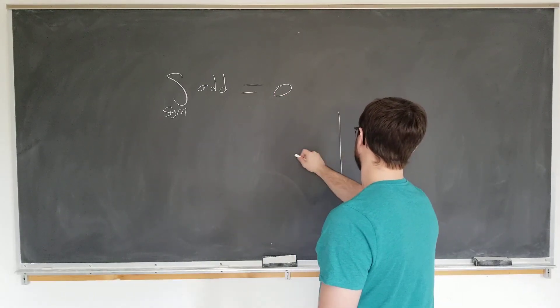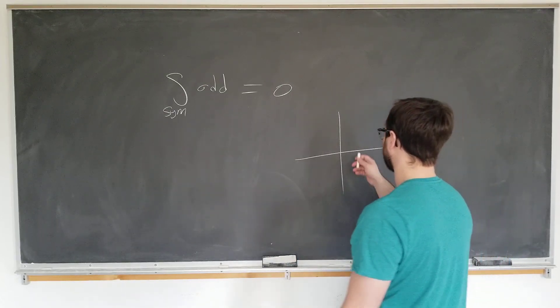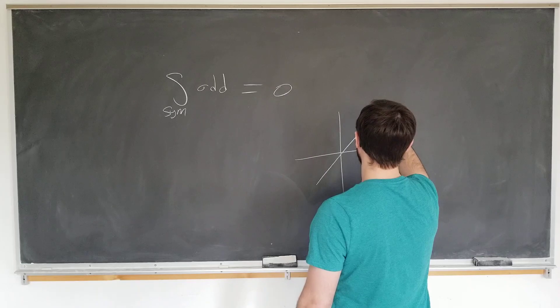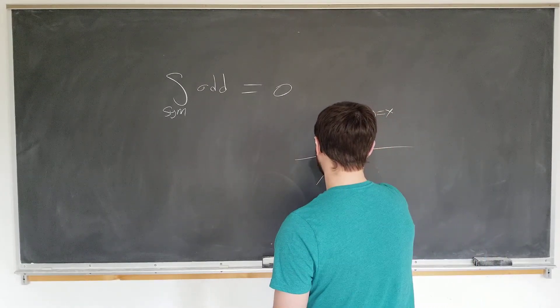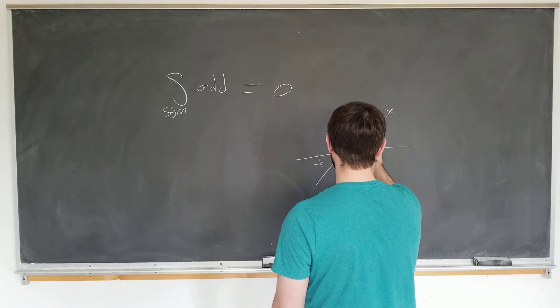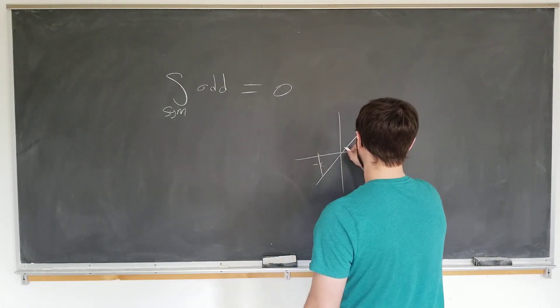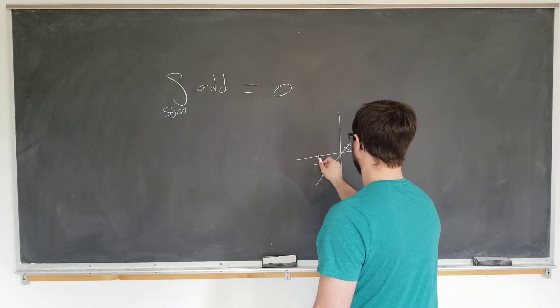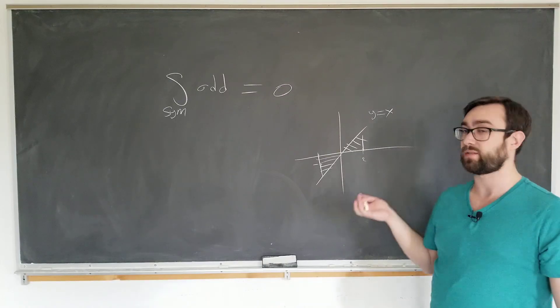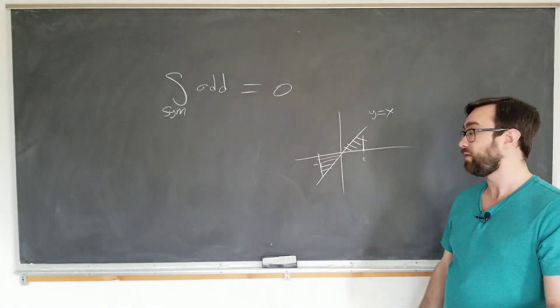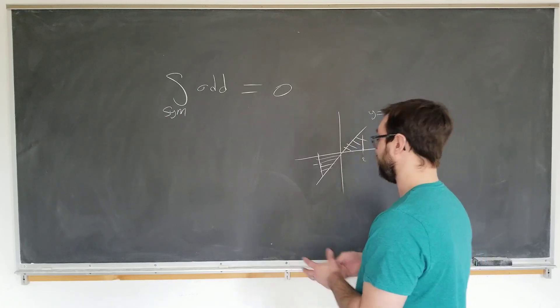But basically the geometric interpretation is if you have an odd function, like y equals x for example, and you look at the area, let's say minus a to a, you're gonna have areas be equal and opposite, so when you add them together there is zero. That's basically what this elementary theorem is going to say, and this is an example where you can use it for.